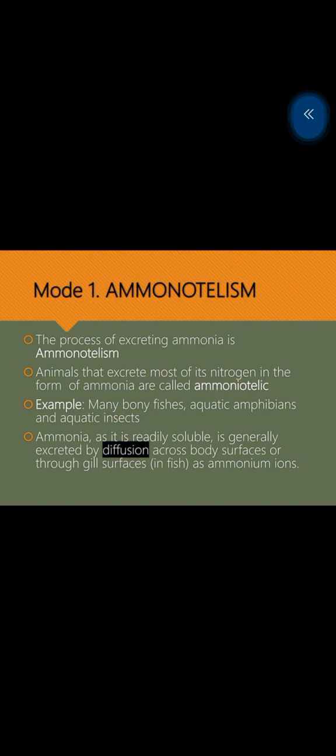Basically, ammonia is highly soluble, so the organism can release it by their gills or by the process of diffusion. Fishes have gills, they can release it with the help of gills, or diffusion can release it.